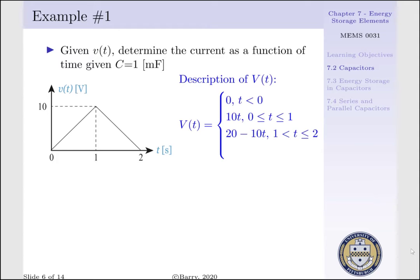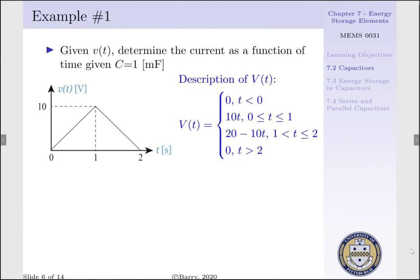m is our slope, which is minus 10, x is t, and b is our y-intercept when x equals 0, or 20 volts. After 2 seconds, we are assuming our voltage is equal to 0.